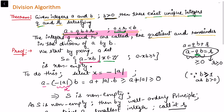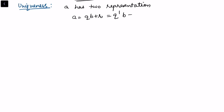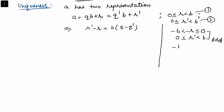We have proved existence. Now for uniqueness, suppose a has two representations: a = qb + r and a = q'b + r', where 0 ≤ r < b and 0 ≤ r' < b. Subtracting gives r' − r = b(q − q'). Taking the negative of the first inequality gives −r ≤ 0, and combining with 0 ≤ r' < b gives −b < r' − r < b.